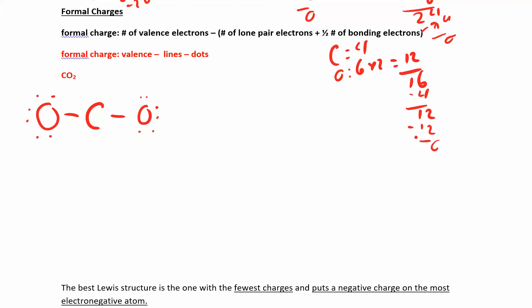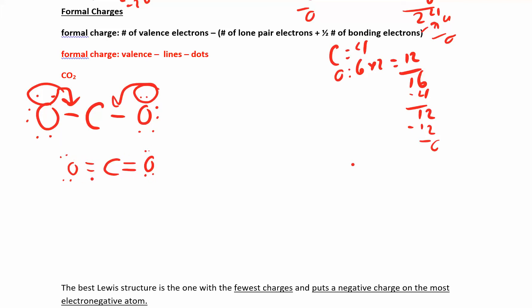When you run out of electrons, you have to start forming multiple bonds, and there are a few different ways to do that. You can take one pair of electrons from each side and form C double bond O, double bond O. Carbon is happy with 8, each oxygen is happy with 8, and the total is 16 electrons. So that's one valid way to draw it.